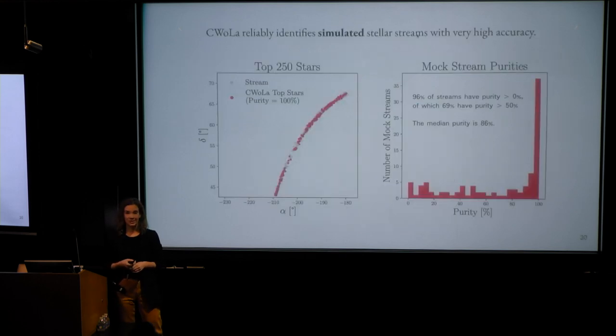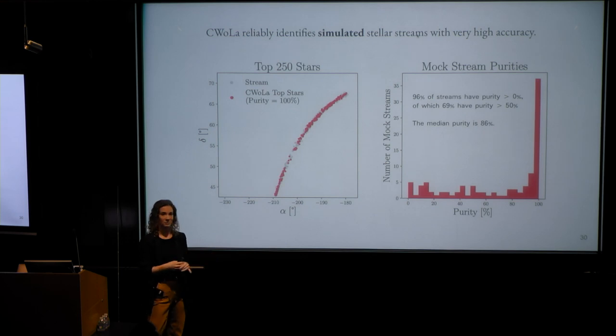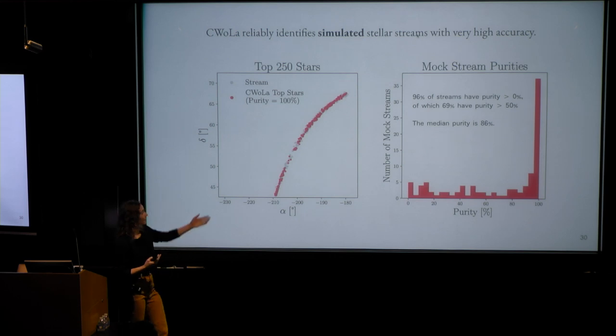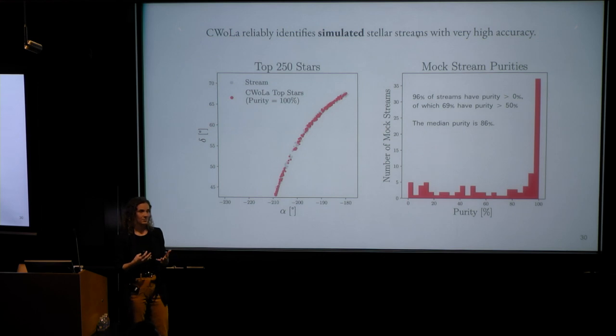So moving on to results. This technique, Koala, reliably identifies simulated streams super well. First we wanted to validate this method on some simulated data just as a proof of concept. And what we find is that it's able to identify anomalous stars extremely effectively. That's true for just a single stream such as this one. And then also if we look at 100 streams, the vast majority of them are identified with really high purity. So that gave us some confidence that if it was able to learn in these idealized settings, it would probably do pretty well on data as well.